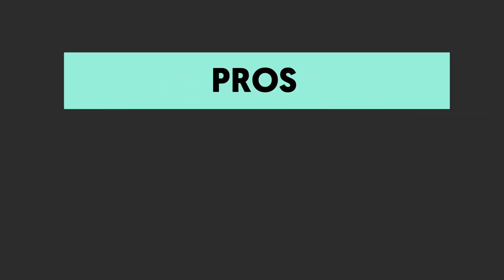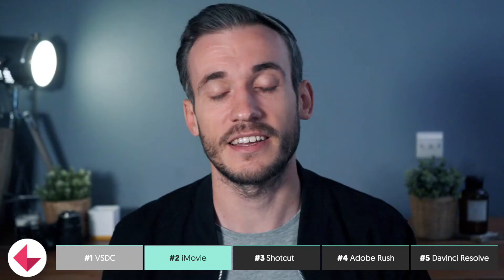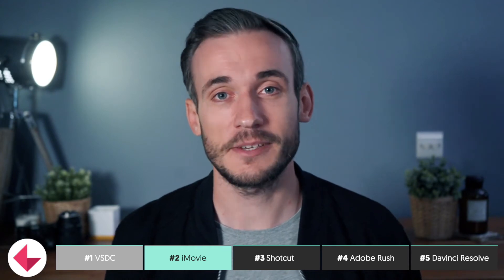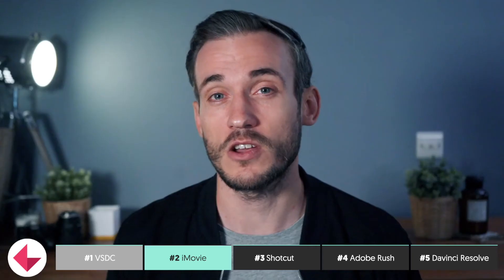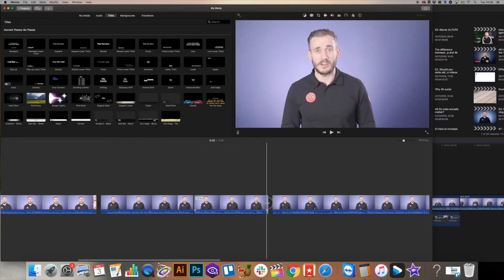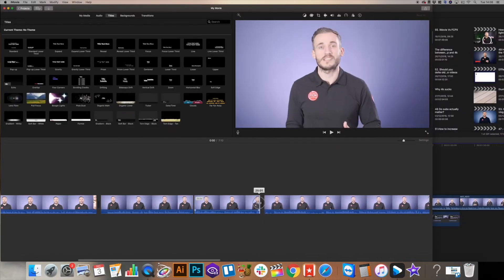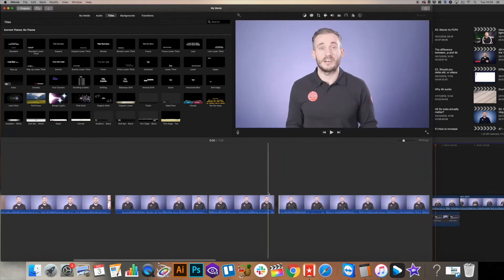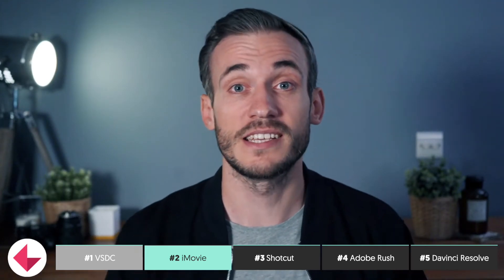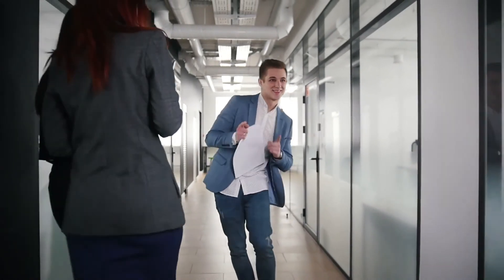So, let's look at the pros. Well, firstly, it's only available on a Mac, which means you own a Mac, and that my friend is a pro. The next pro is that the minimal interface allows you to do the basics required in editing very well, without too much confusion. You get three layers to your timeline, so you can add music and then add two layers of video, meaning you can jump between A-roll, like this, to B-roll, which is like this.